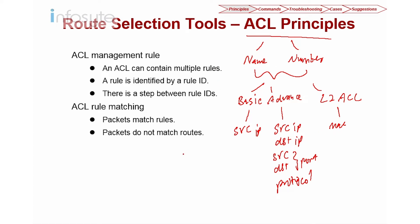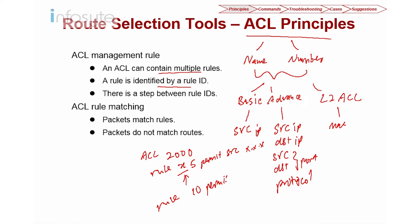In an ACL, let's say we create a basic ACL 2000. We then create rules with rule numbers. We have multiple rules, each identified by a rule number — for example rule 5 permit with a source, and rule 10 permit with another entry. The gap between rule IDs is called a step. By default the step is 5, and the step can be reconfigured.